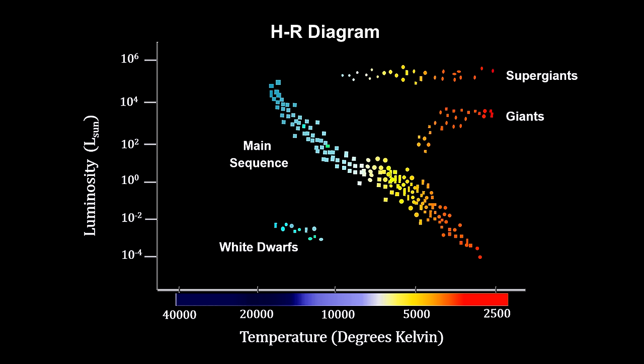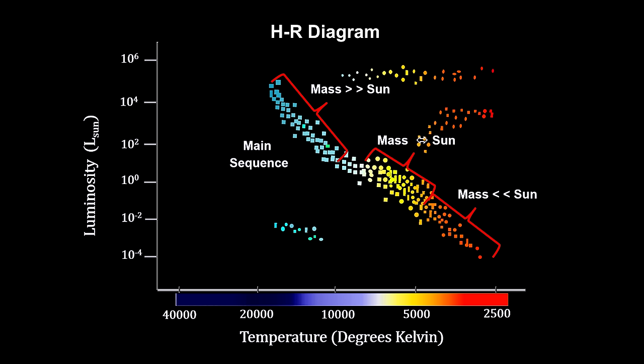Here's the Hertzsprung-Russell, or HR, diagram we covered in the Distance Star segment of the How Far Away Is It? video book. The long diagonal line represents the main sequence for stars in hydrostatic equilibrium burning hydrogen. The lower-right red stars are cool, low-mass stars that are a fraction of the mass of the Sun. The middle yellow and orange stars are closer to the mass of the Sun, and the upper-left blue and white stars are the hot, high-mass stars, many times more massive than the Sun.